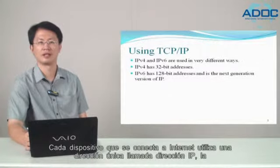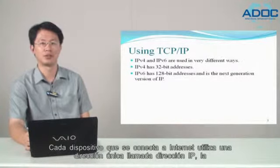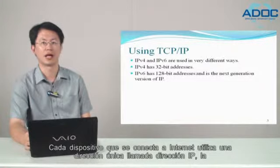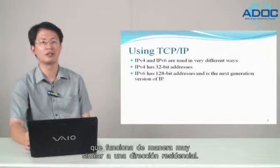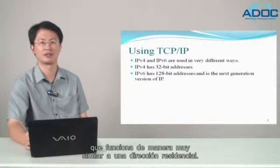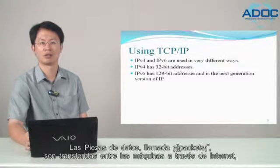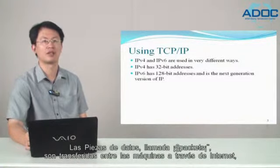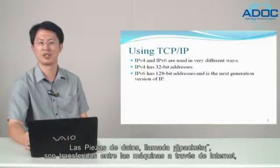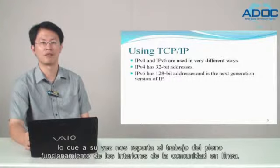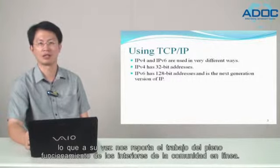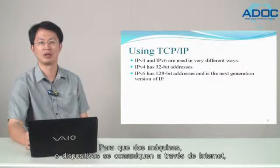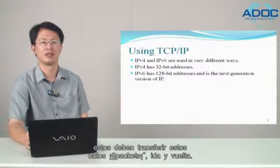Every device that connects to the internet uses a unique address called an IP address, which works very similar to a host location address. A piece of data called packets are transferred via the internet between machines. In order for two machines or devices to communicate via the internet, they must transfer these packets of data back and forth.